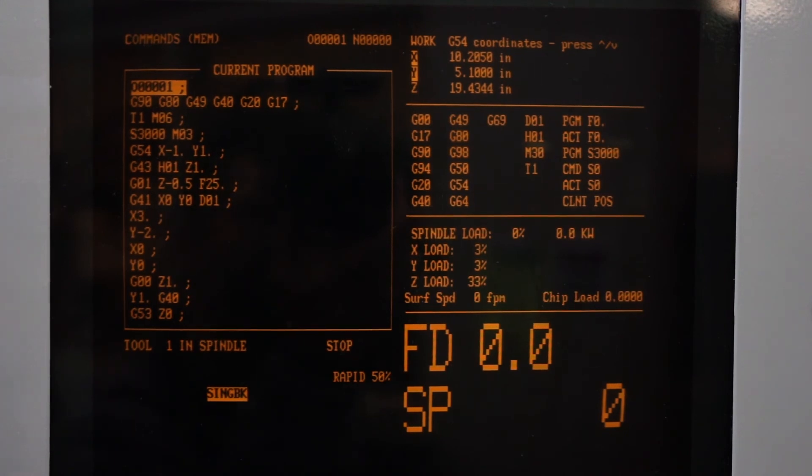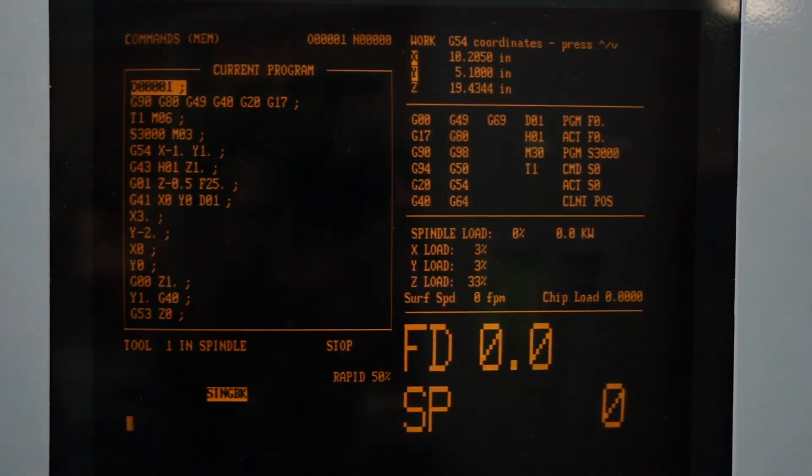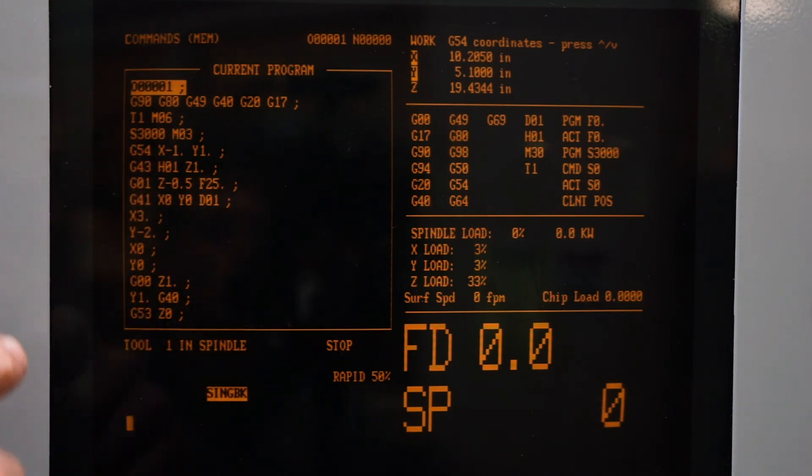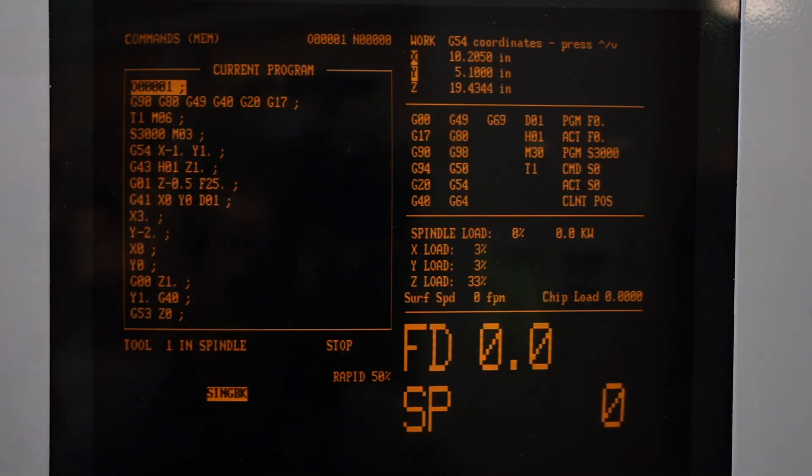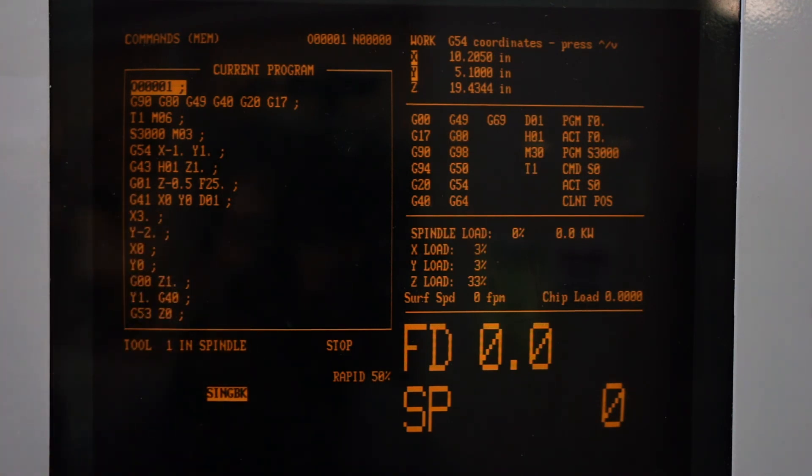Okay, this is the program that we just wrote on the whiteboard. You can kind of see how it all looks. This is program O1. And then we have our safety line, we call up our tool, we turn on our spindle, we call off our work offset, go to a position, rapid to one inch above the part. Then we're going to feed down at 25 inches a minute to a negative half inch. Then we're going to activate our cutter comp. And then we're going to do our XY moves, finish up, lift up the tool and go home.